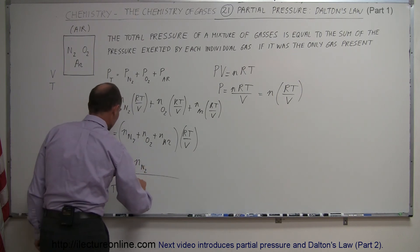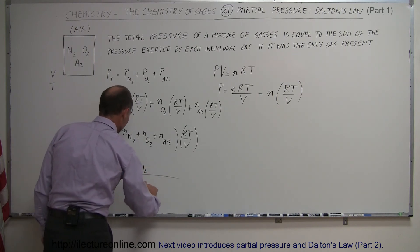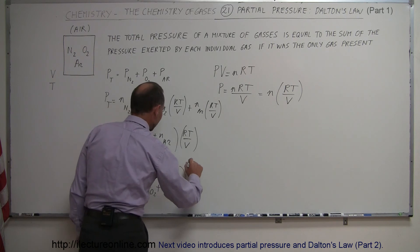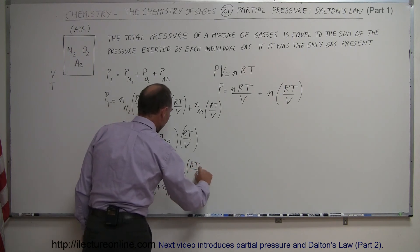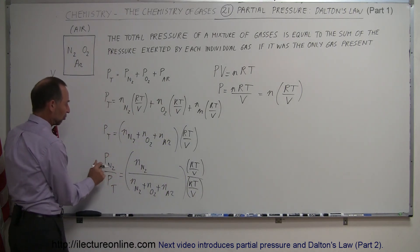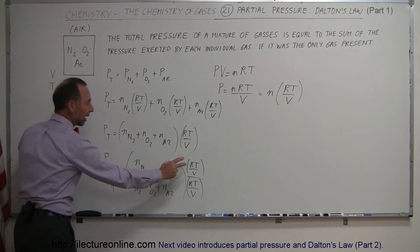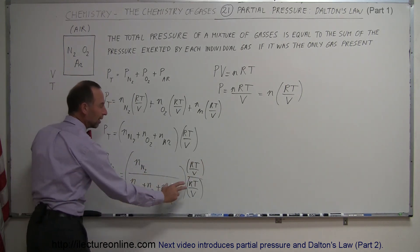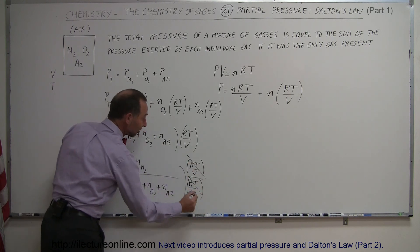And so this would then be equal to the number of moles of the nitrogen gas, divided by the number of moles of the nitrogen gas plus the number of moles of the oxygen gas plus the number of moles of the argon gas, all multiplied times. Now here you see that we have RT over V in the numerator and RT over V in the denominator, because the partial pressure of nitrogen gas is the number of moles times RT over V, and the total pressure is the sum of all the number of moles times RT over V. This cancels out.